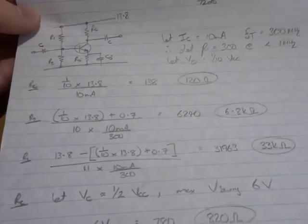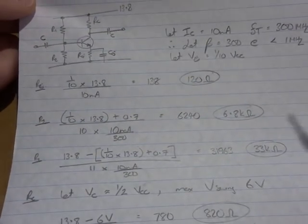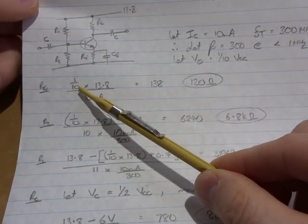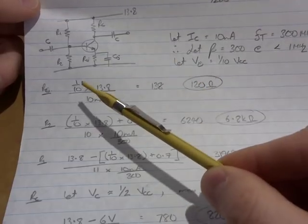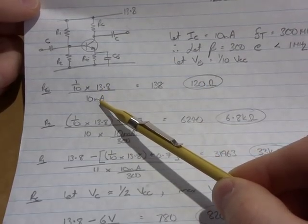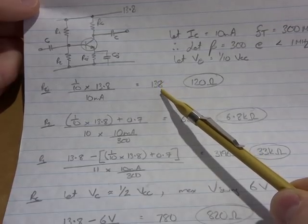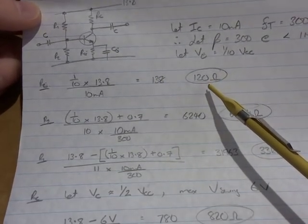Right, anyway, so based on that, in terms of working out the various components, for our emitter resistor here, we've got a 10th of Vcc, Vcc is 13.8 volts, so 1/10th of that, divided by our 10 mA passing through it, gives us 138 ohms, so I'll just use a standard value of 120.